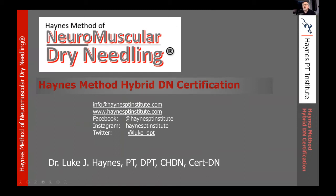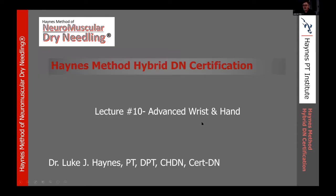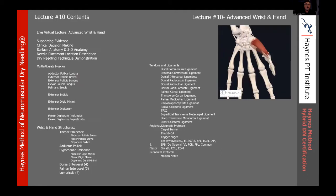We're going to get started here. Tonight is lecture number 10: advanced dry needling of the wrist and hand. We're now going to be getting into some of the more technical pieces that we see with dry needling — a lot of structures in the wrist and hand, a lot more precision required for identifying, especially when it comes to all the ligaments associated with the wrist and hand. Hopefully we'll guide you through that and give you the framework to expertly dry needle in that area.